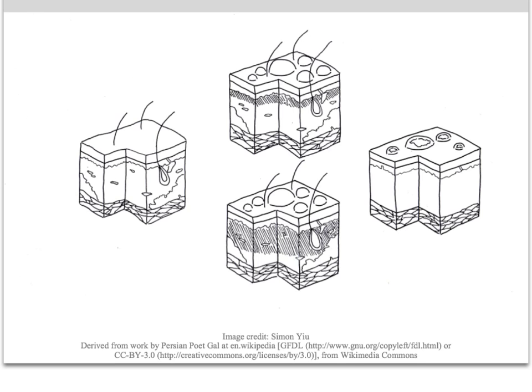In summary, we reviewed the classification of burn severity and extent — from first degree or superficial, to second degree or partial thickness, to third degree or full thickness burn — and discussed how to estimate the burned area. In part 2, we'll discuss the complications of burn. Thank you for watching.